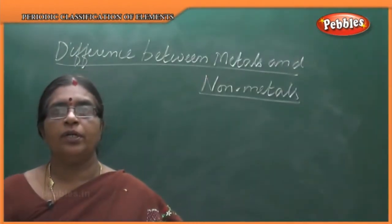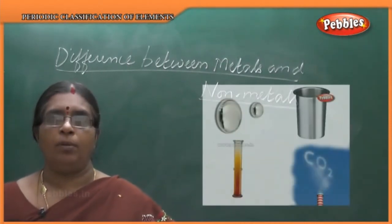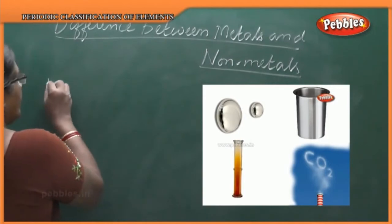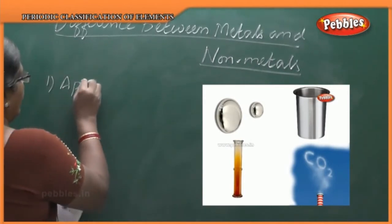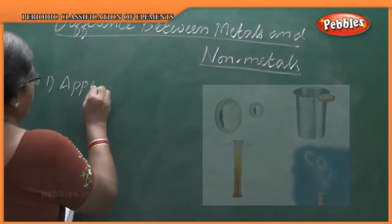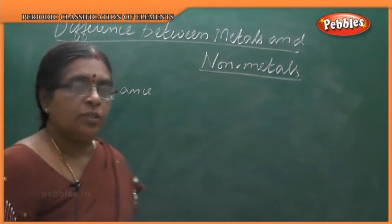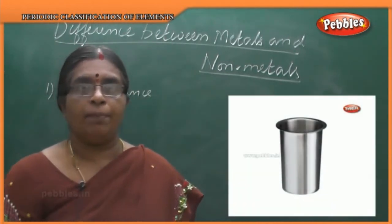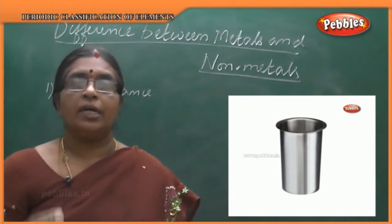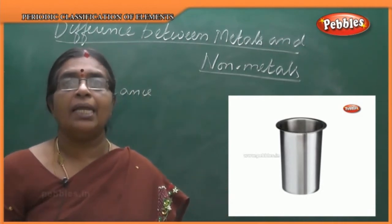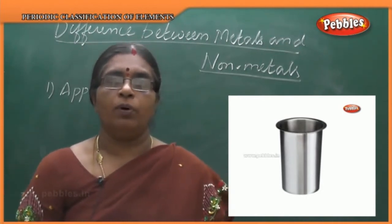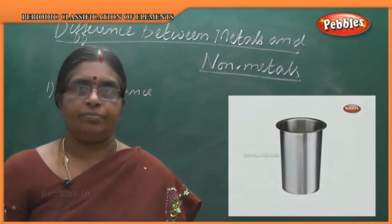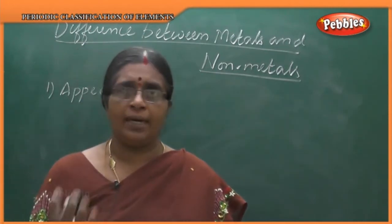Next we go to the difference between metals and non-metals. The first property is appearance. Metals have a shining appearance — they can be polished. This is called metallic luster.